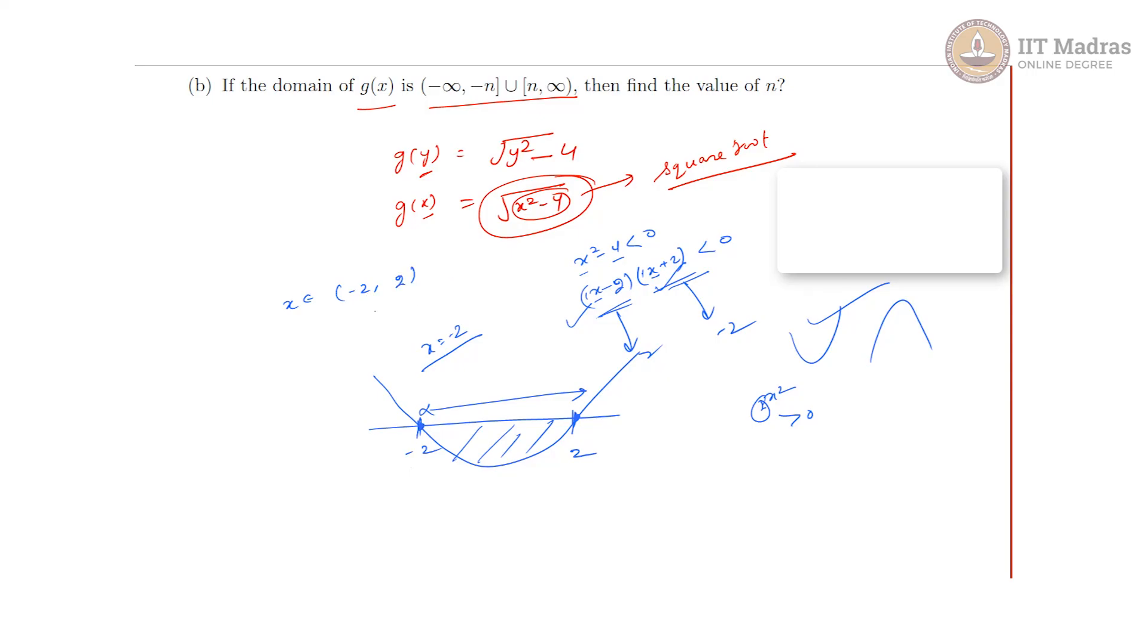The function is defined for this region and then this region. This is (-∞, -2] since -2 is included, close bracket. Since 2 is included, this is close bracket and this is infinity: [2, ∞). How will I join them? Using union. This is given in the question. If you see properly, then n = 2 is our answer.